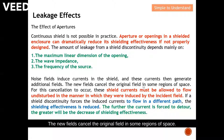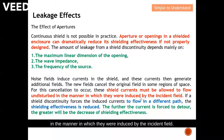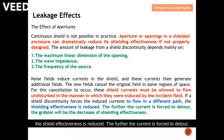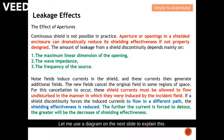Noise currents induce currents in the shield, and these currents then generate an additional field. This new field cancels the original field in some region of space. For this cancellation to occur, the shield currents must be allowed to flow undisturbed in the manner in which they were induced by the incident field. If a shield discontinuity forces the induced current to flow in a different path, the shielding effectiveness is reduced. The further the current is forced to detour, the greater the decrease in shielding effectiveness.